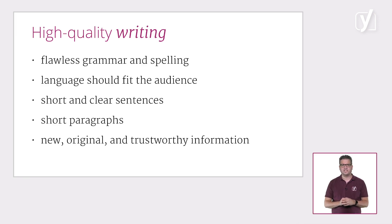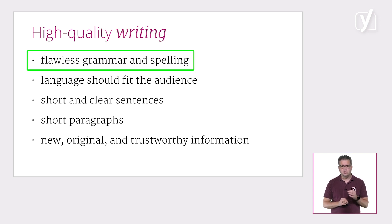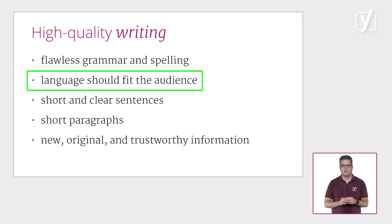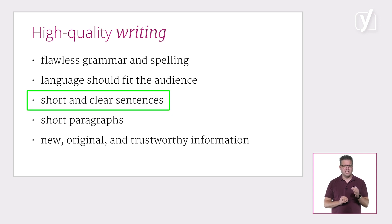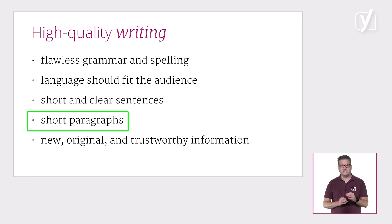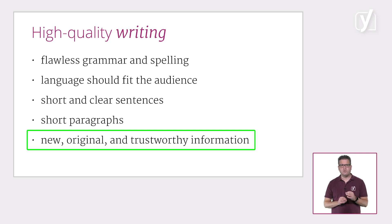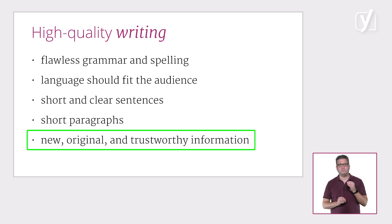When it comes to high-quality writing, there are also a few key things you have to consider. As obvious as it may sound, it is crucial to have flawless grammar and spelling. The language you use should fit the audience. However, generally, short and clear sentences are preferred and try to keep the paragraphs short as well. Most importantly, the content should provide new, original and trustworthy information. That is why you will need to do the research. And remember to always give credit to the sources you use by linking to them. In this case, the content should be organized and written in such a way that it is immediately perceived as useful and unparalleled.